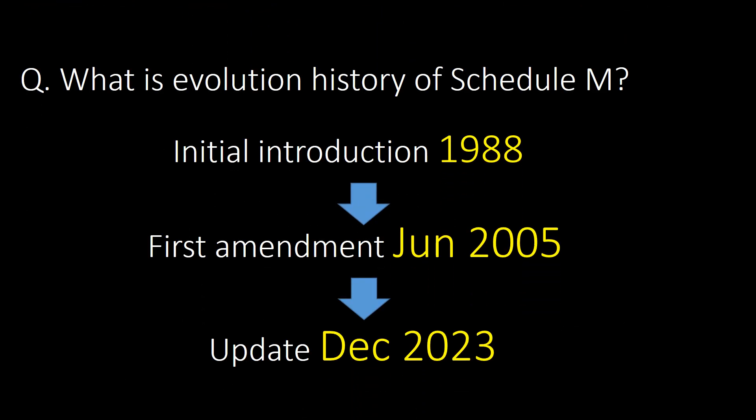What is the evolution history of Schedule M? Initial introduction was in 1988, the first amendment was in June 2005, and the latest update was in December 2023.